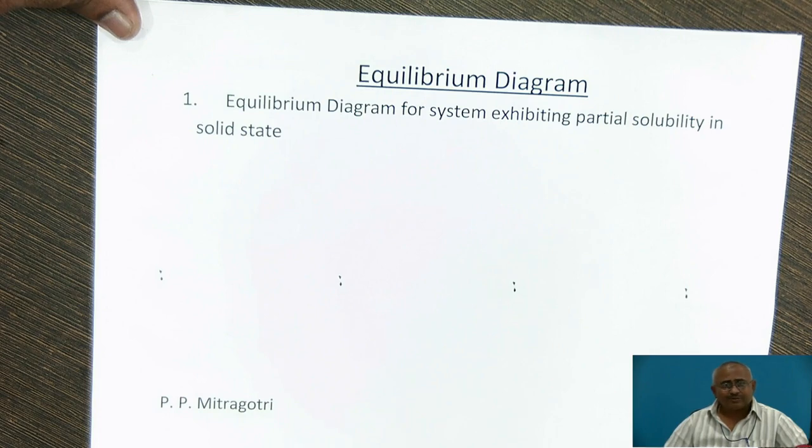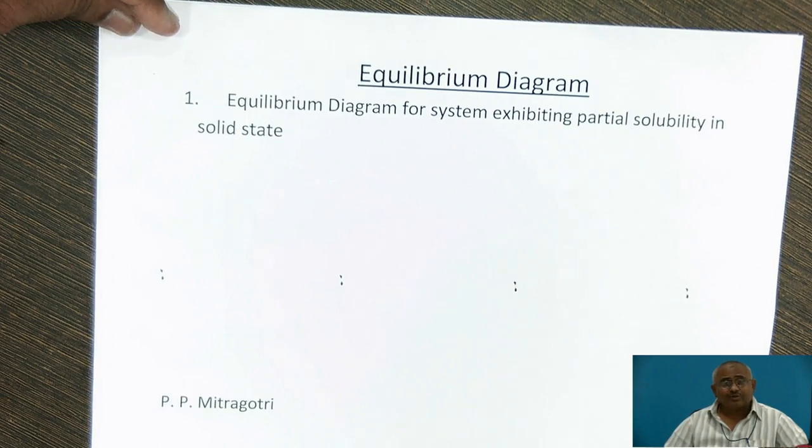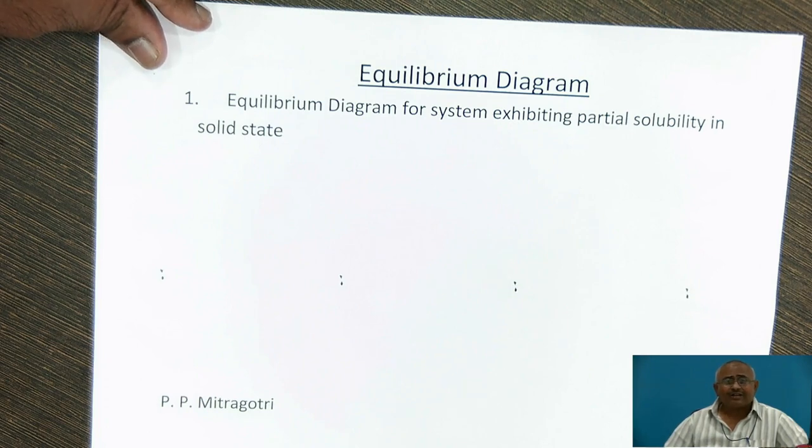Today, we are going to study another equilibrium diagram, that is equilibrium diagram for the system exhibiting partial solubility in solid state. In such system, all the alloys will not be solid solution alloys, but some of the alloys will be non-solid solution alloys, unlike in isomorphous system of alloys.